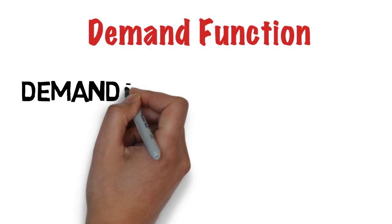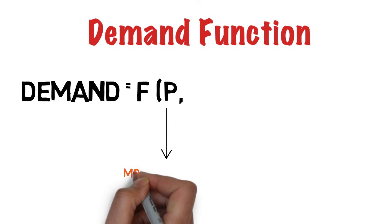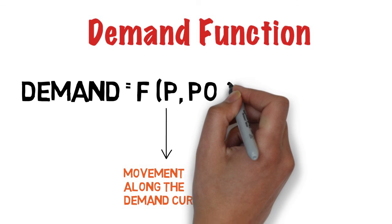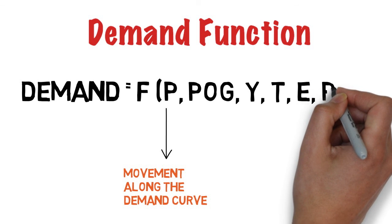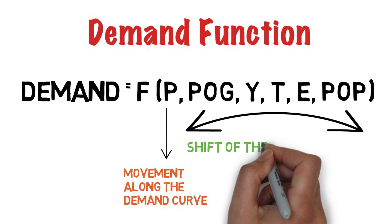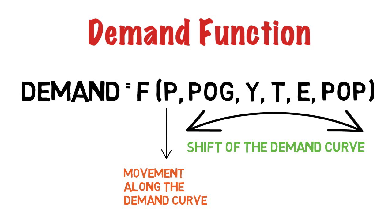Now we're going to summarize all this information in what we call a demand function — a shorthand version of what we've spoken through. Demand for any product is a function of price, which causes a movement along the demand curve, plus the other factors we looked at: the price of other goods, people's incomes, their tastes, their expectation levels, and the size of the population. All of these determinants cause the entire demand curve to shift — a change in demand — either left for a decrease or right for an increase.